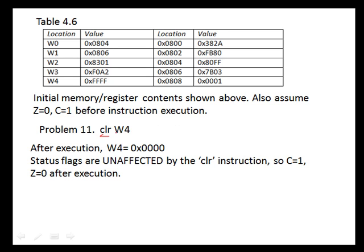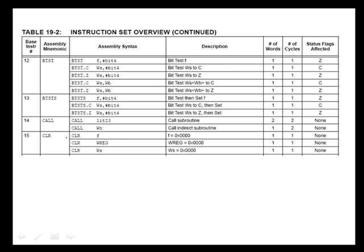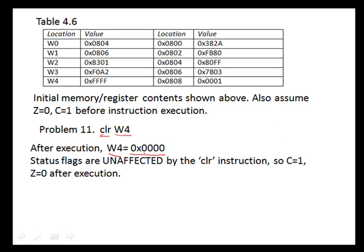Problem 11 says to clear W4. This is a word operation, so after execution W4 will be 0. Checking the flags by locating the CLR instruction in the table, we see that none of the flags are affected. You might think that since the result was 0 the zero flag would be set to true, but that is incorrect. Because this instruction does not affect the flags, carry remains 1 and zero remains 0 after instruction execution.